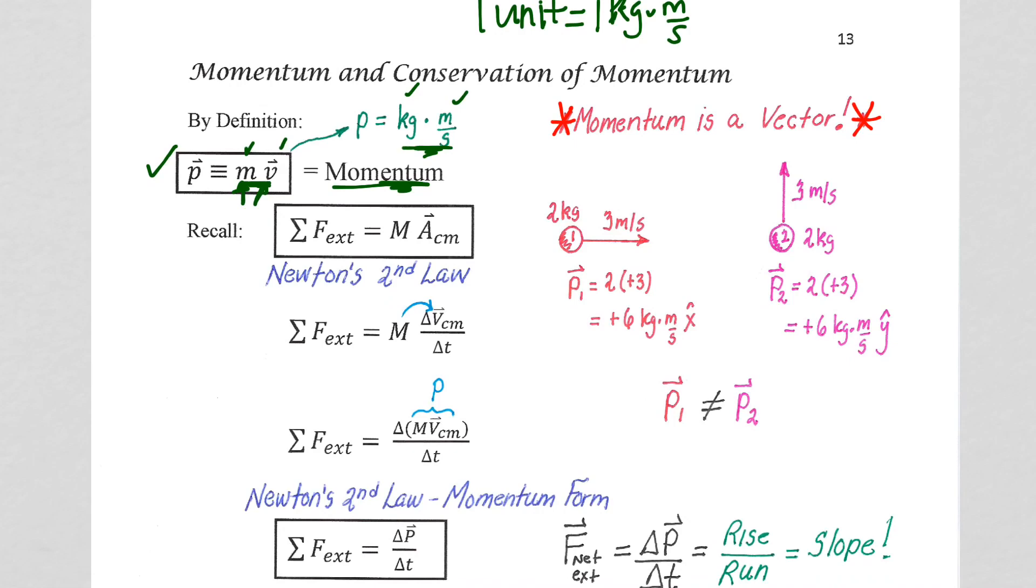For example, if you take a two kilogram object, please put this in your notes. If you take a two kilogram object moving at three meters per second to the right, you would calculate that that object has a momentum of six momentum units to the right.